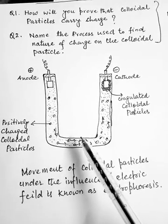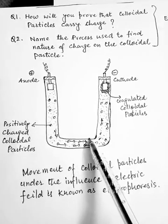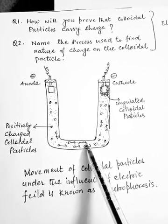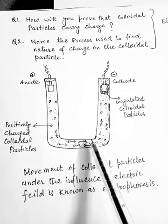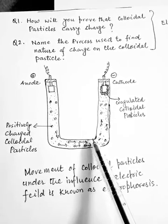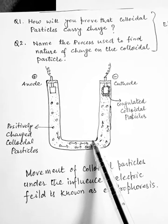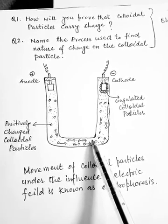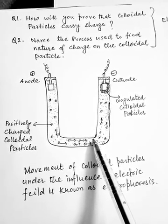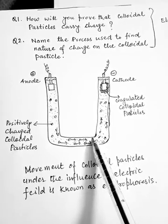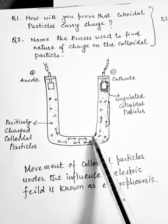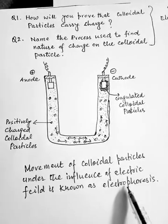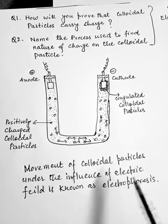In the next video, we will discuss another related phenomenon. If a semi-permeable membrane is placed to prevent the movement of colloidal particles, then under the applied potential the dispersion medium itself moves. This movement of the dispersion medium under the influence of an applied electric field is known as electroosmosis, which will be discussed in the next video.